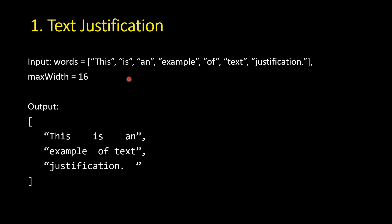In this problem you are given a list of words and a maximum width that can fit in one line. You have to proceed in a greedy manner — the first word comes, then the next, and you keep track of the characters. As soon as it crosses the max width, you move that word to the next line. It's very similar to text justification in applications like MS Word.